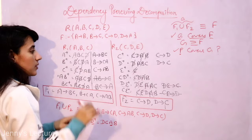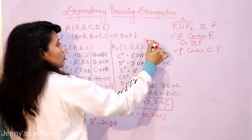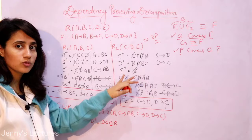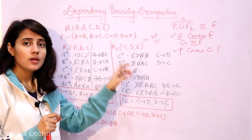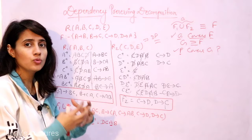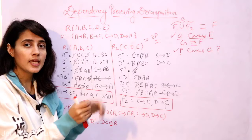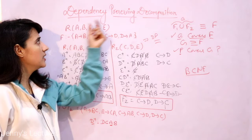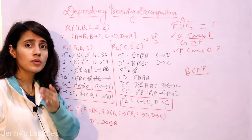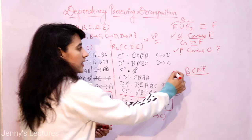This decomposition is dependency preserving. However, dependency preserving is not a compulsory property for decomposition — lossless is compulsory. Sometimes it is not possible to get a dependency preserving decomposition, and that case occurs only in BCNF decomposition. Sometimes BCNF decomposition will not be dependency preserving. But up to third normal form, it is always possible to get a dependency preserving decomposition. This exceptional case we will discuss later with an example.